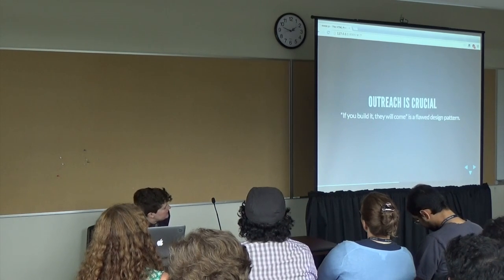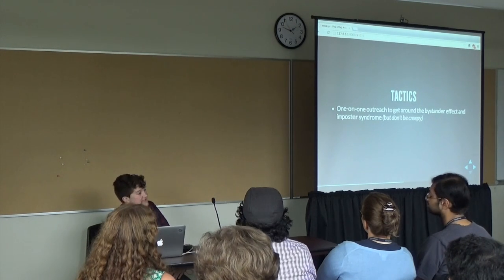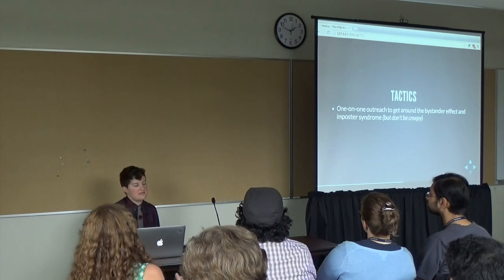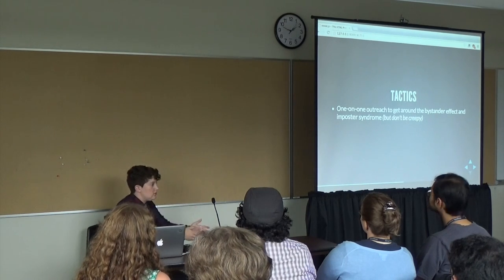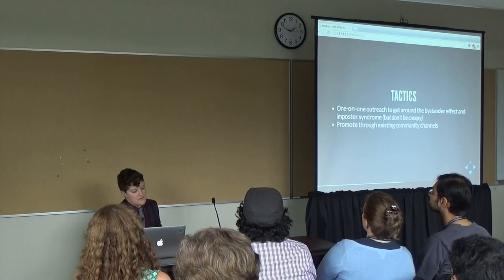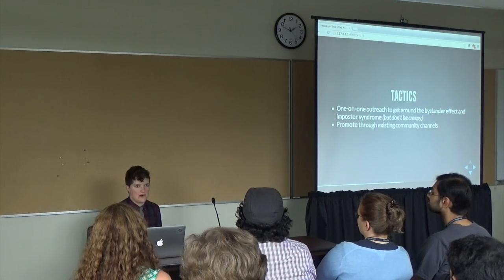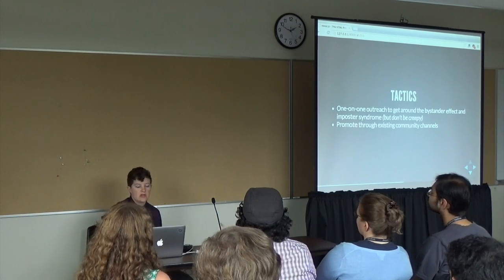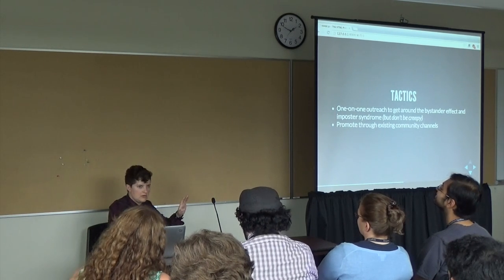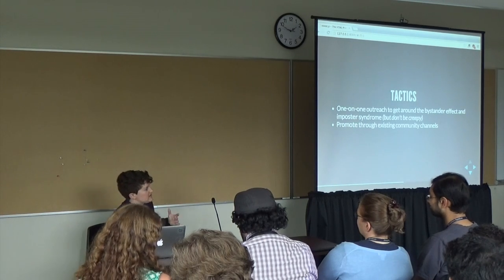Some outreach tactics I used: one-on-one outreach to get around the bystander effect and imposter syndrome — but don't be creepy, respect people's consent. I used people's contact forms on Drupal.org, direct messages on Twitter, one-on-one emails, basically making it clear: I think you would be a great person to have as part of this — are you interested? Promoted through existing channels: the New York Drupal Meetup group, Drupal NYC's Twitter account. I didn't start a separate group on groups.drupal.org; every time I posted a new meetup event, I'd also post a comment on the last one so people who attended and were interested would hear about the next one.